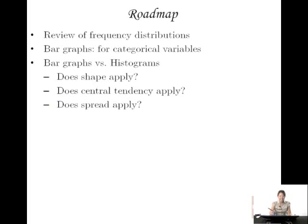So today's roadmap looks like this. First we're going to review all the frequency distributions we've looked at so far. Then we're going to talk about bar graphs and how they're different. Mainly, it's that they involve categorical variables and looking at the frequency of each value. Then we're going to contrast bar graphs and histograms because they're going to look very similar to each other, but they're very different ideas underlying them. We're going to talk about whether shape applies to bar graphs, central tendency, and spread as well.